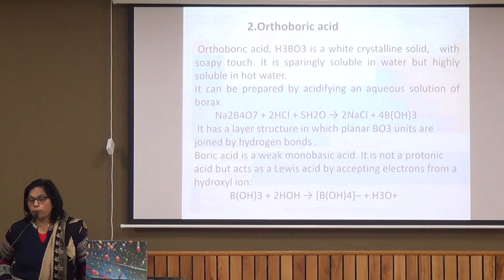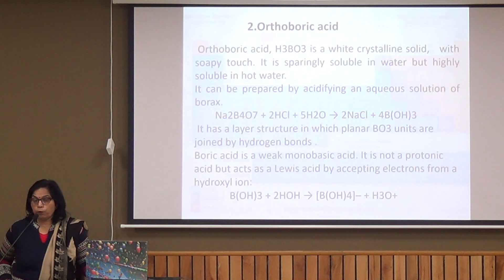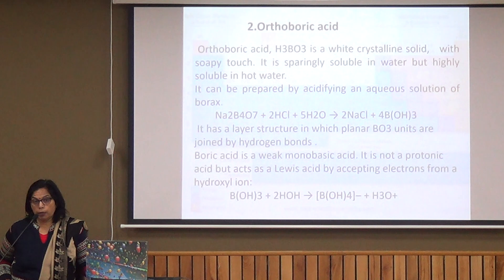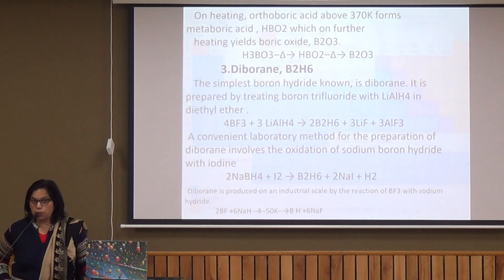Why is boric acid a weak monobasic or monoprotic acid? Because it is a Lewis acid — it accepts an electron pair from water molecules and releases H+. It accepts a lone pair of electrons from water molecules in the form of OH. So in water, it forms B(OH)4− and releases H+, meaning it does not release its own H+; it releases the H+ of water.